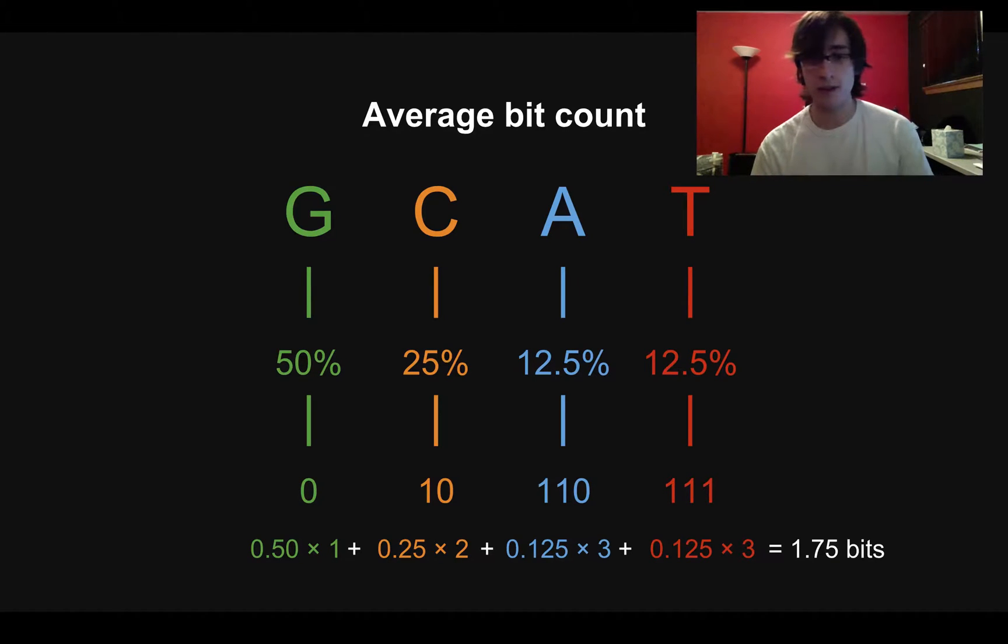And then the other two things are three bits, but they each happen 12.5% of the time. So we can do 0.125 times three, and we just add that twice. And this will give us a weighted average. It's a measure of if we encode a long string of DNA and I tell you it is like 20 letters, I just want to know how many bits it will be. So, how many bits the average letter takes up.